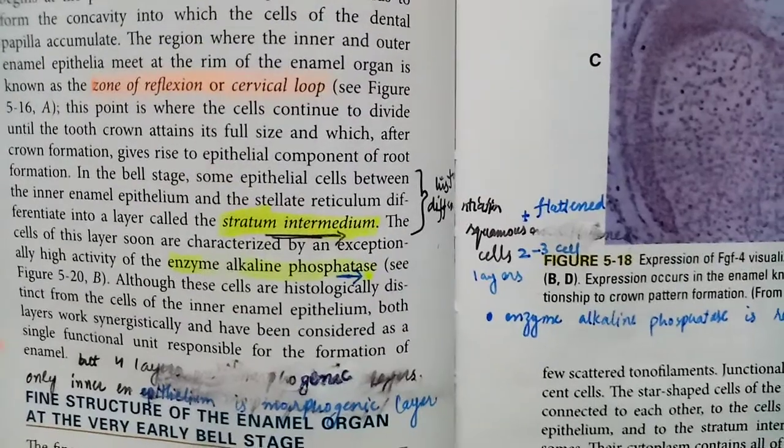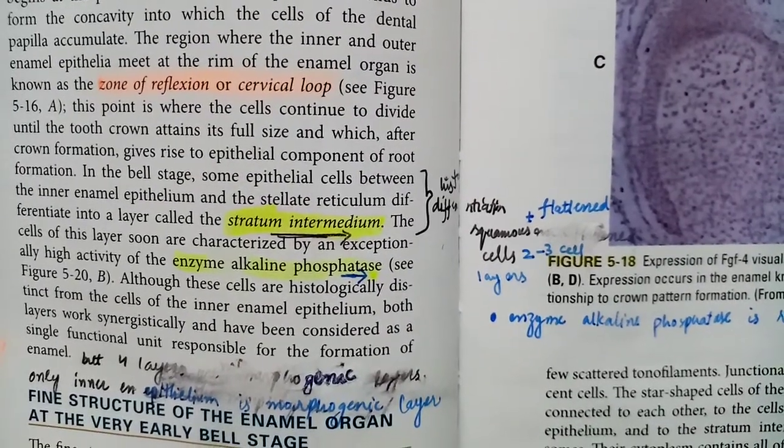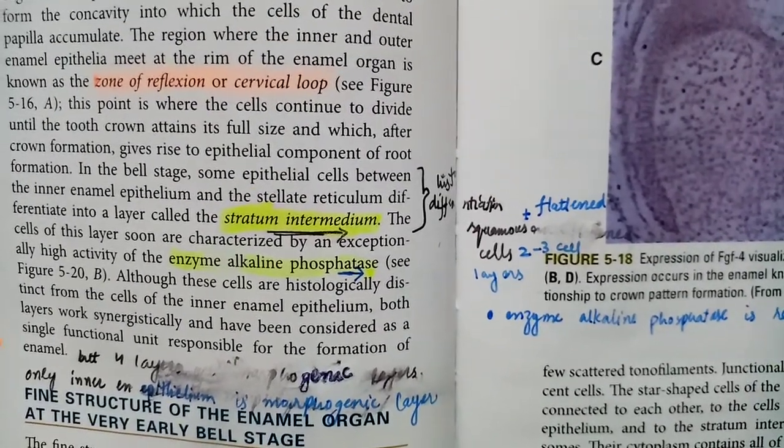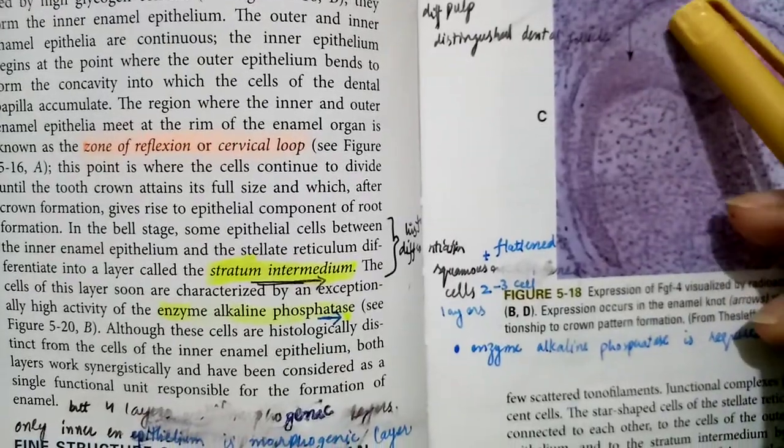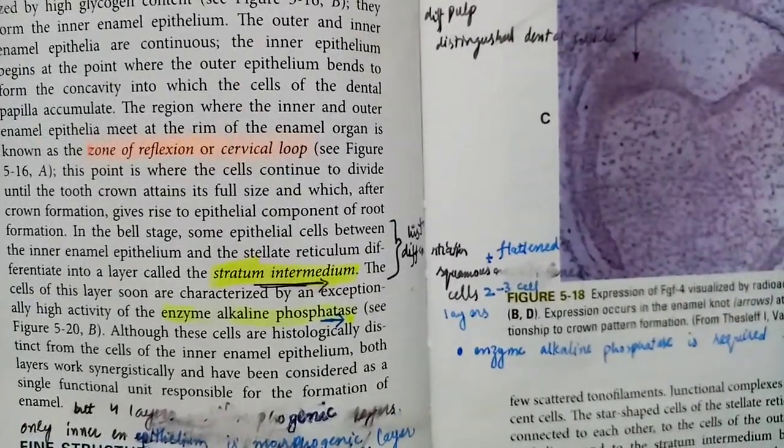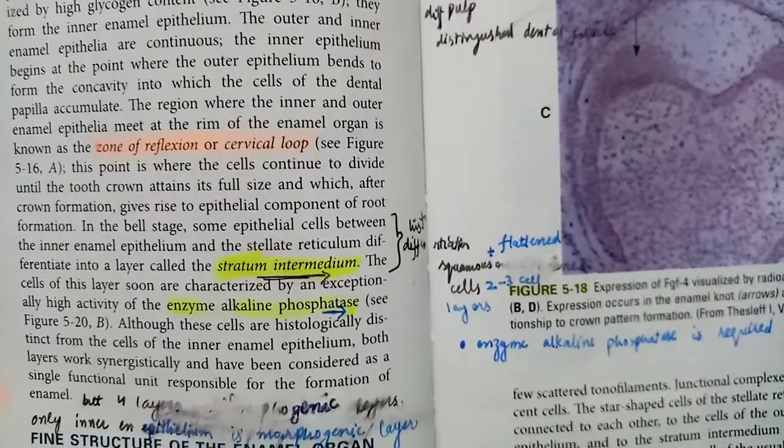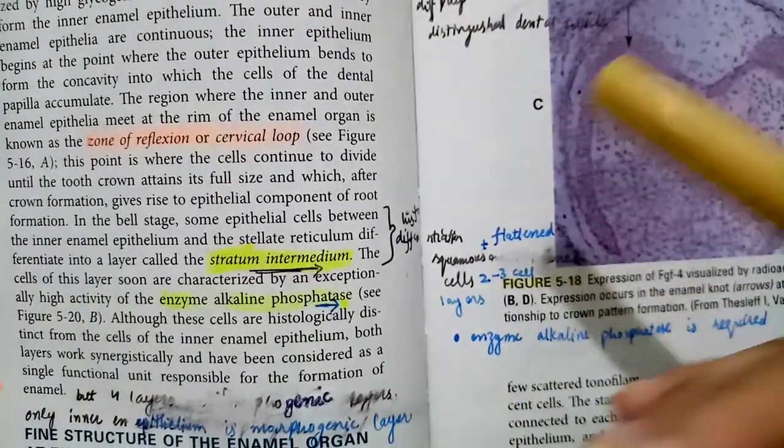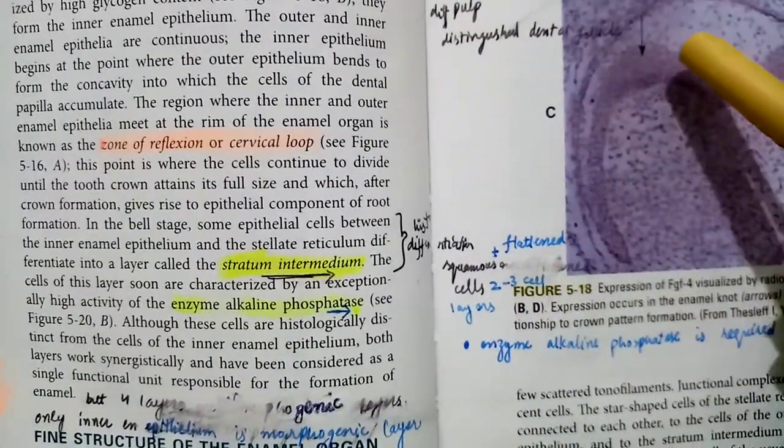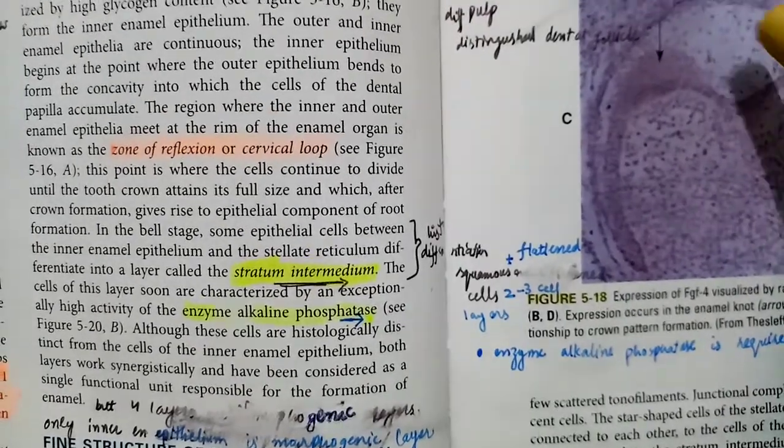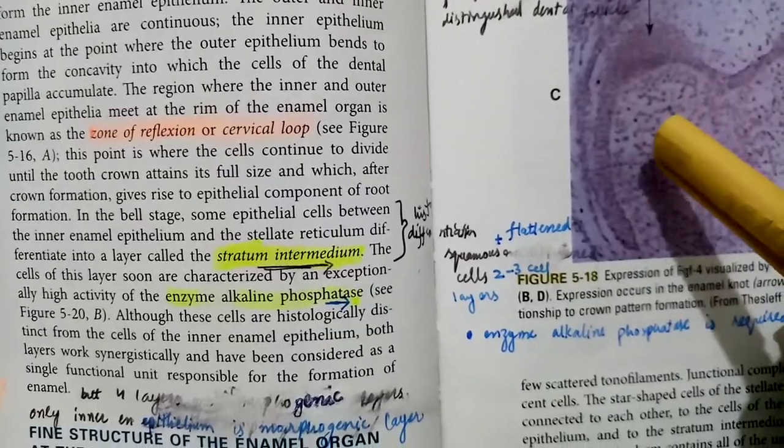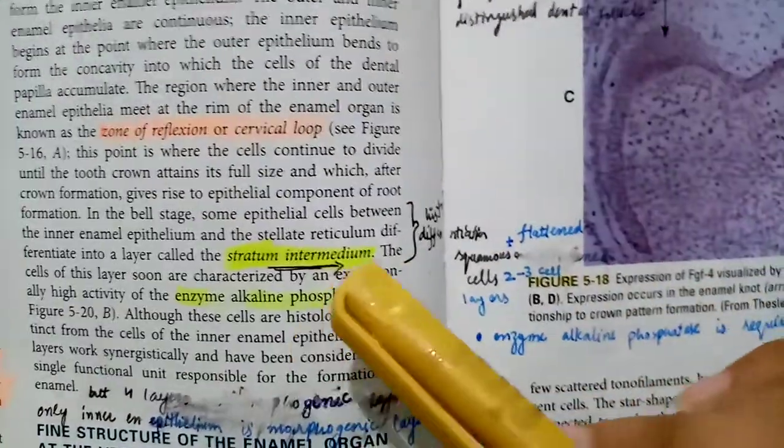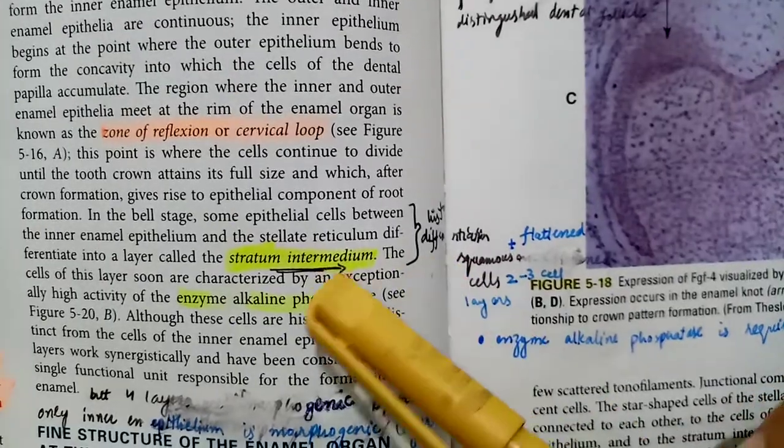In the bell stage, some epithelial cells between the inner enamel epithelium and the stellate reticulum differentiate into a layer called the stratum intermedium. This is the inner enamel epithelium and the stellate reticulum. In the bell stage, if you have not seen the lecture, please go through the lecture of cap stage of development in which I told you about stellate reticulum. Now in between the stellate reticulum and the inner enamel epithelium, a third layer comes, another layer, and that will be stratum intermedium.